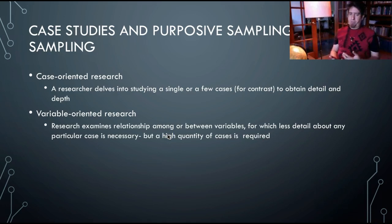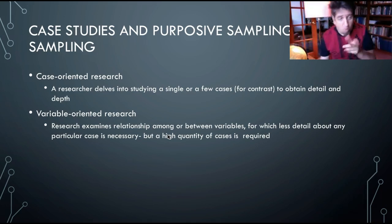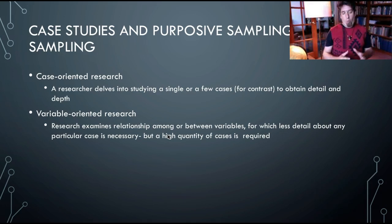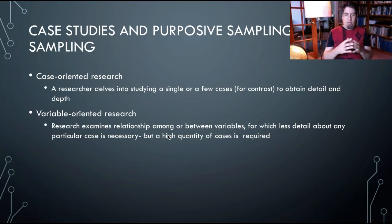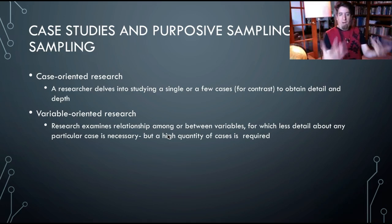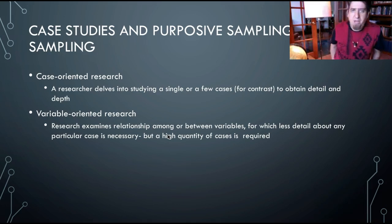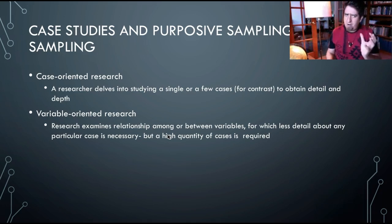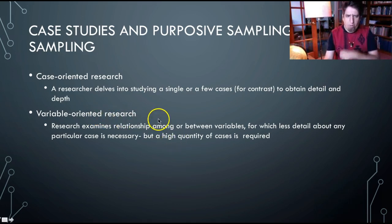This is very different than the variable-oriented research which we've been discussing. Variable-oriented research is most often quantitative, while case-oriented research is often qualitative or mixed methods. Variable-oriented research seeks to examine relationships between or among variables. It creates formal hypotheses and uses statistical testing methods such as ANOVA or regression. Here what we're going to be focused on is case-oriented research.